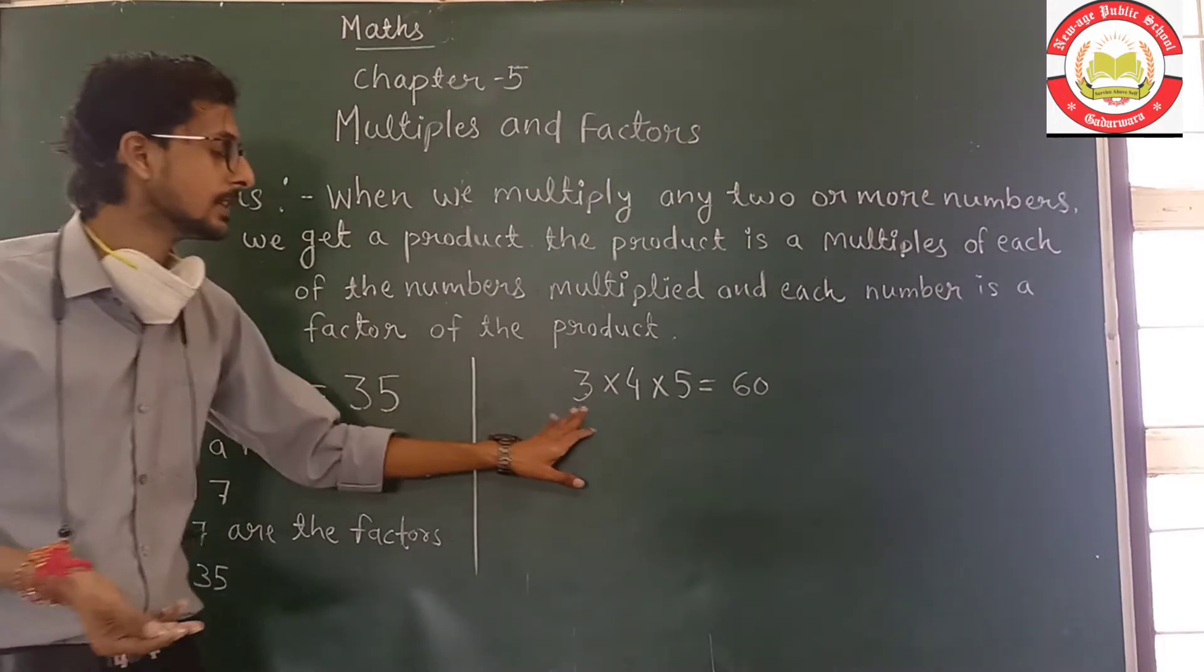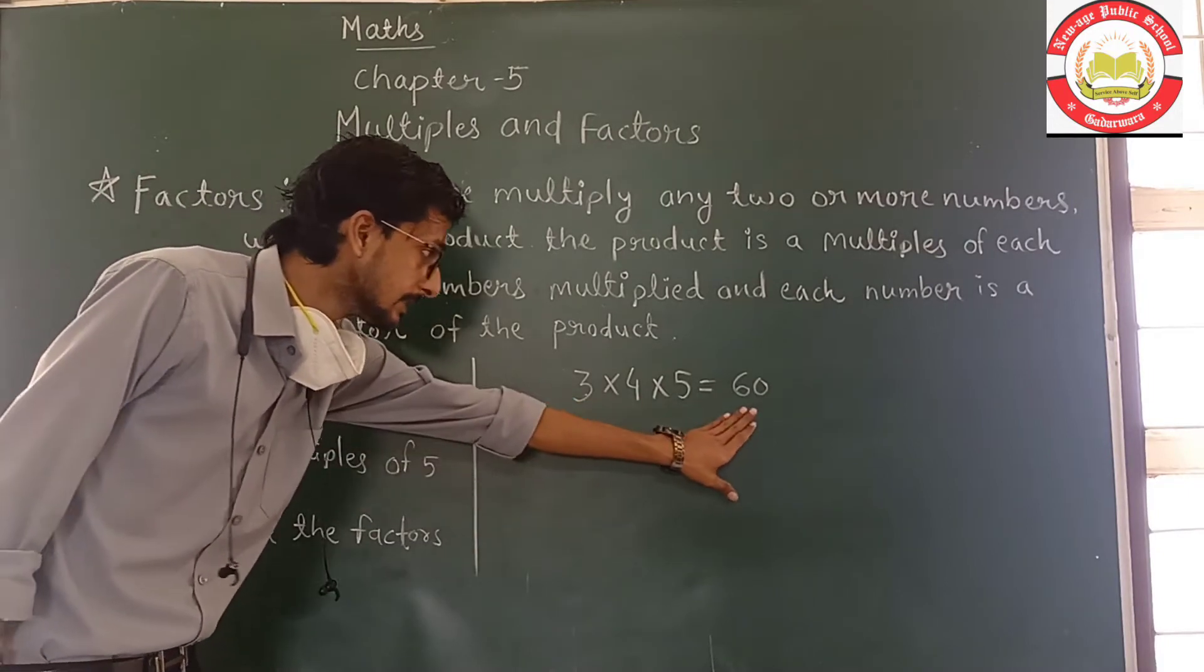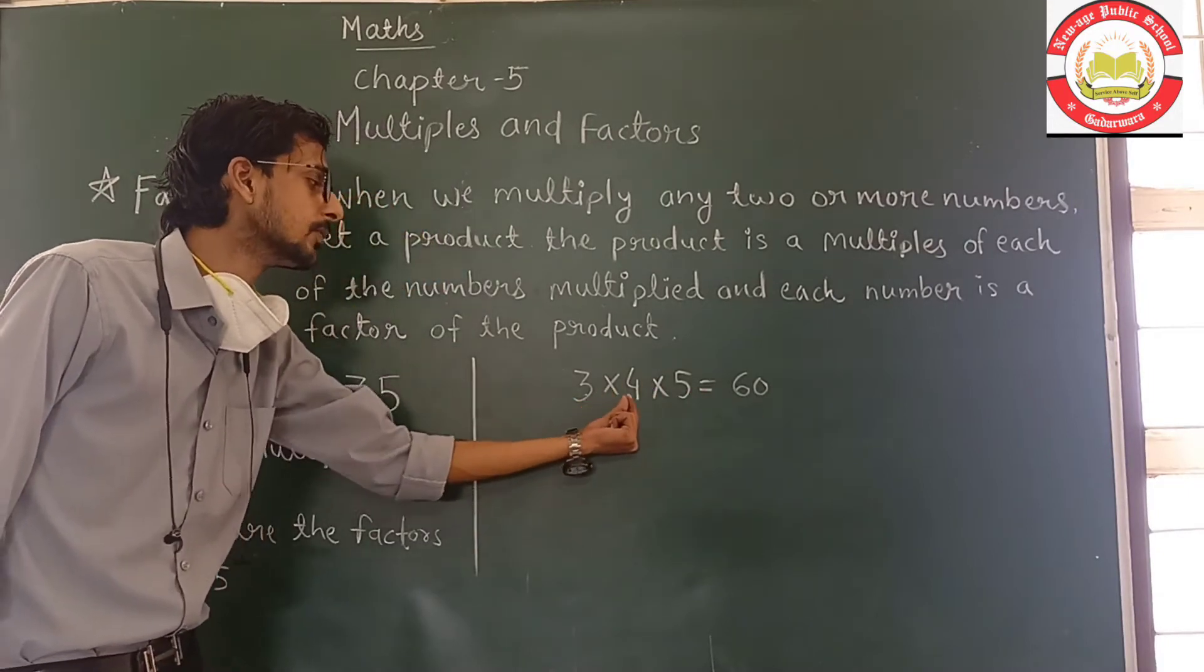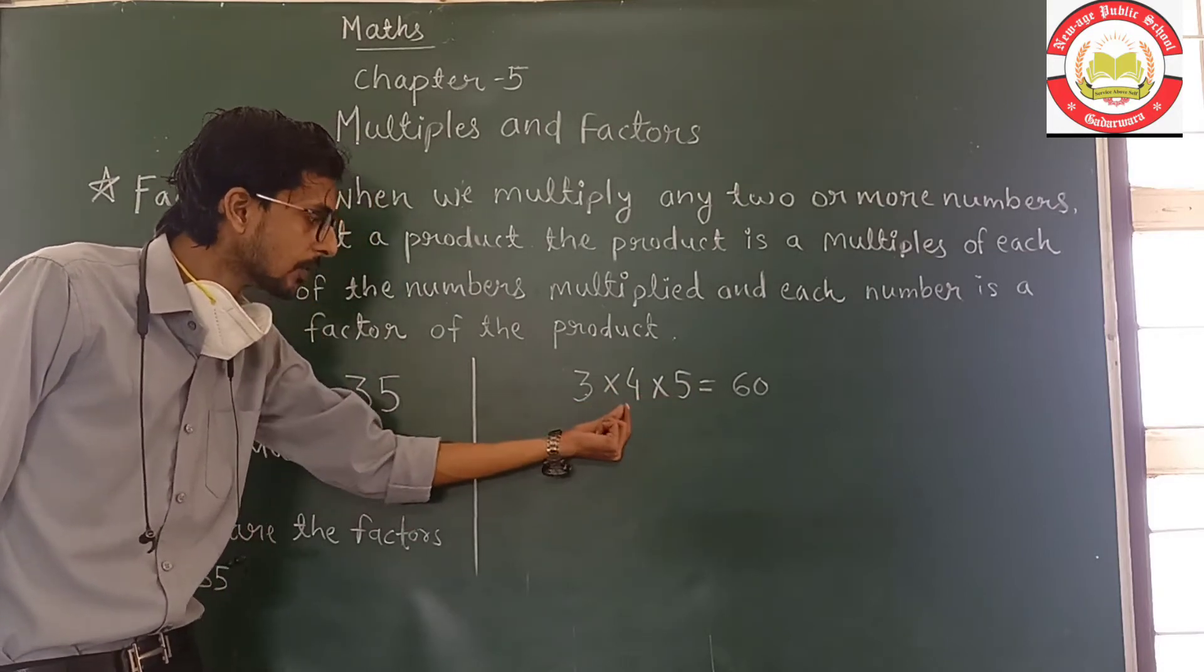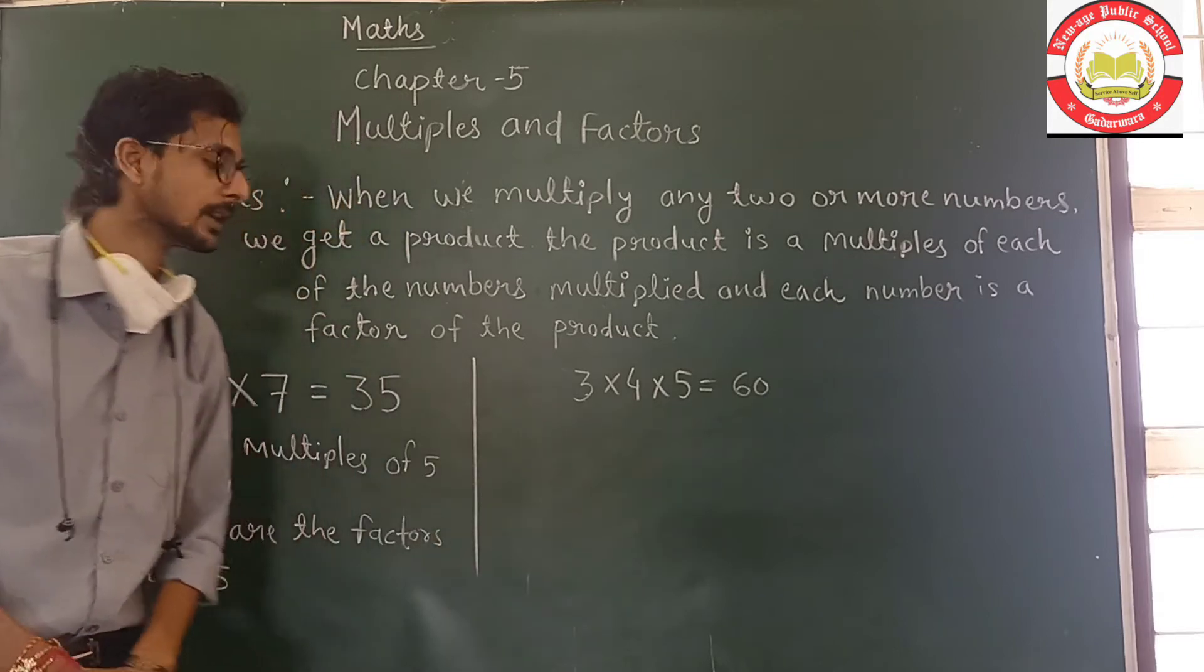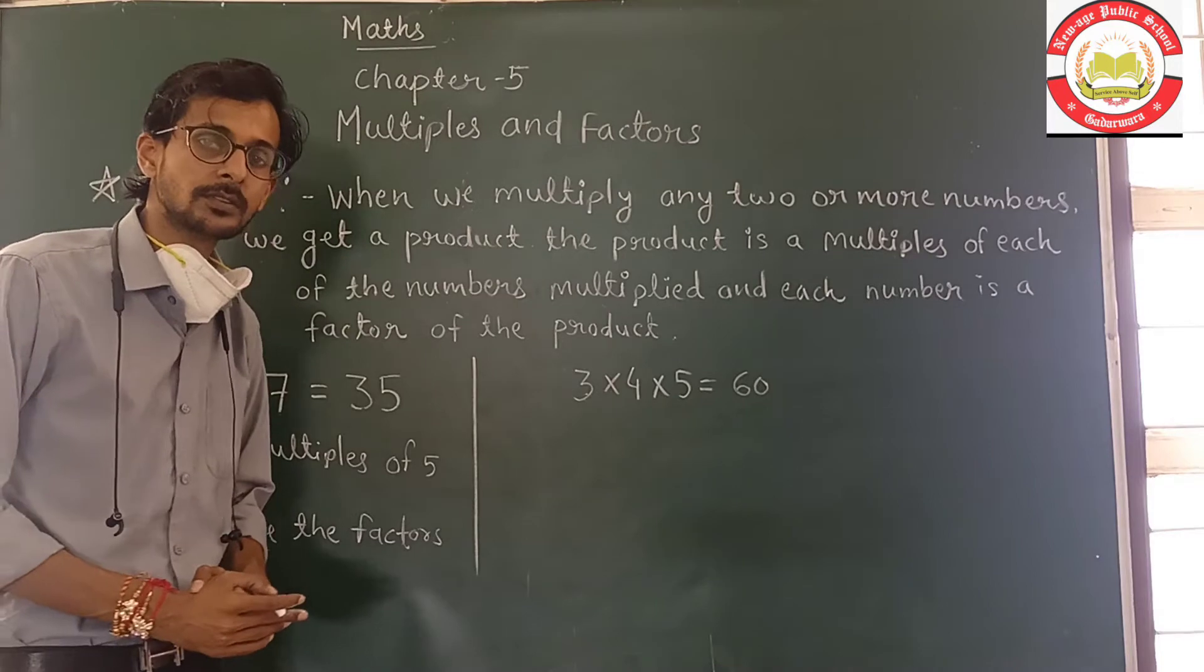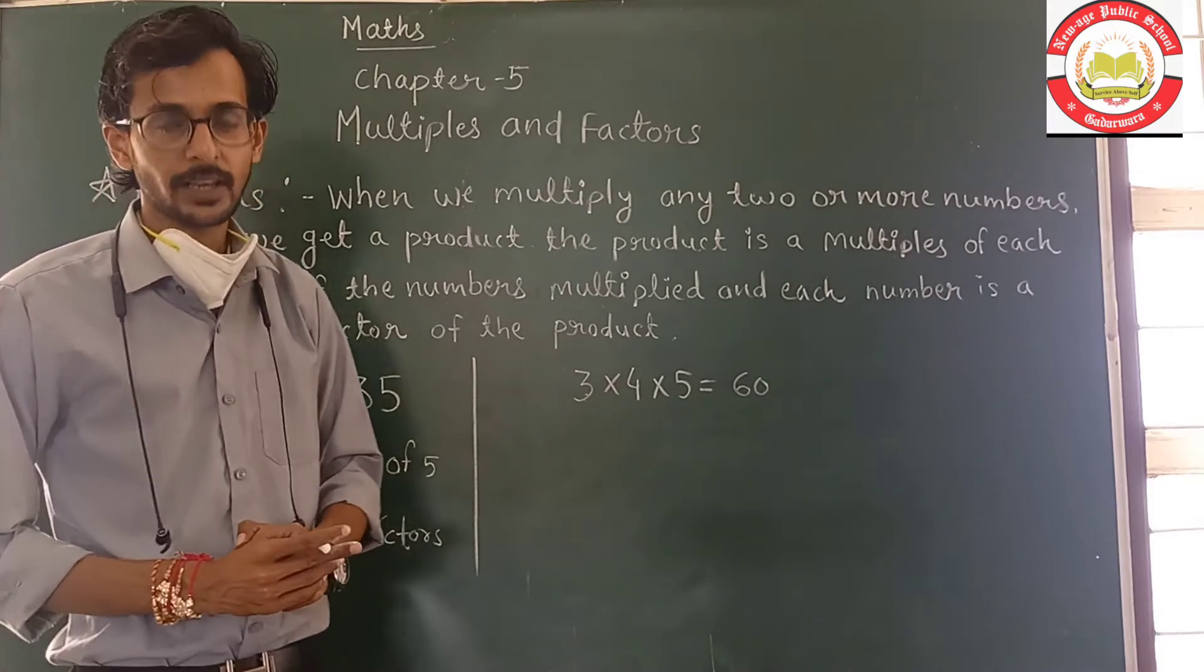Now 3×4×5 equals 60. So 60 is a multiple of 3, 4 and 5. And 3, 4 and 5 are factors of 60. Now we can solve these particular questions. Thank you.